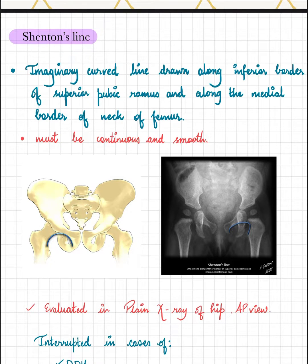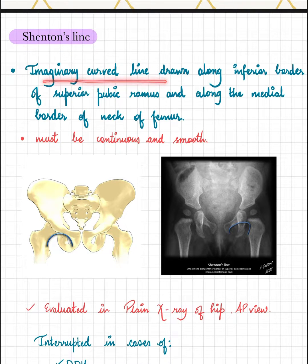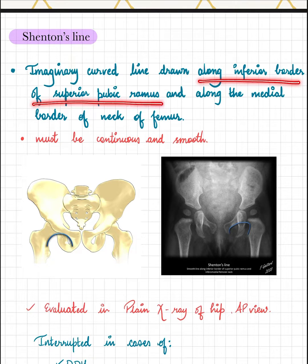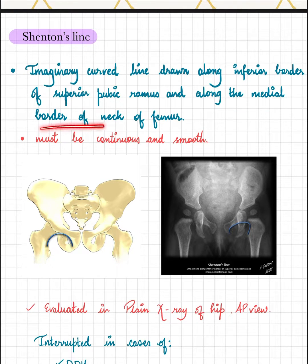Shenton's line is a very important radiographic marker of hip pathologies in orthopedics. It is an imaginary curved line which is drawn along the inferior border of the superior pubic ramus, and it is continuous along the medial border of the neck of femur.